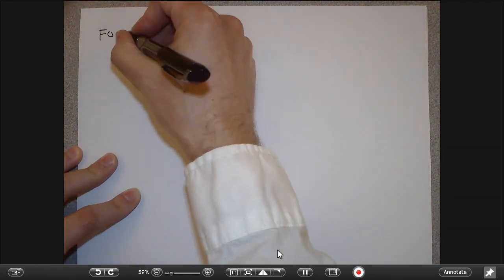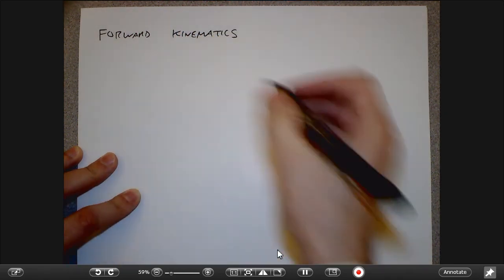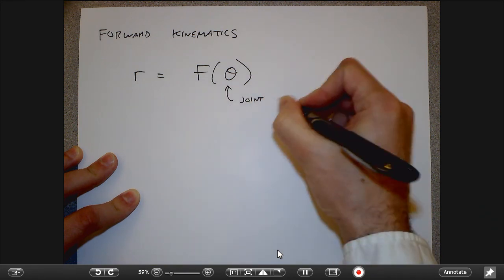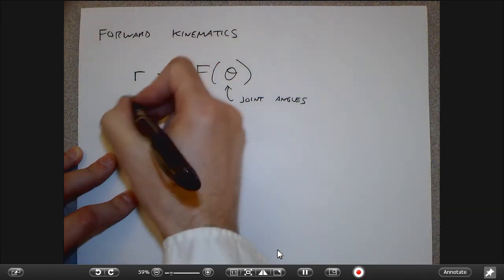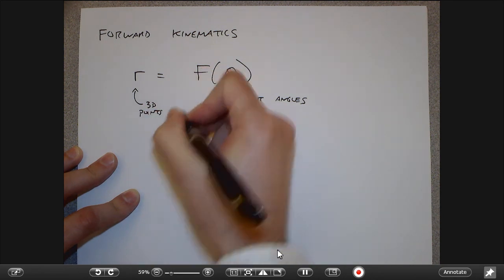Today's lecture is on inverse kinematics and motion editing. Where we left off last time was forward kinematics of a human body — basically saying that if I told you where all the joint angles were, I would be able to produce the positions of any point on the body. Forward kinematics is a formula that tells me: given all the joint angles, where are the 3D points on the surface of the body?